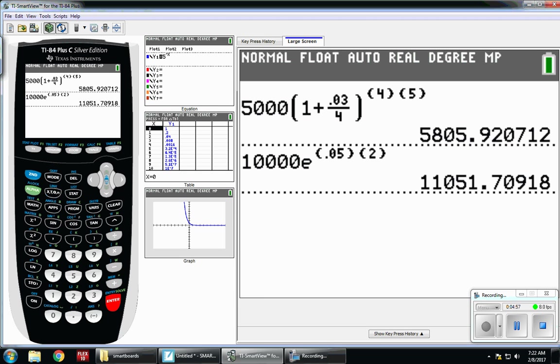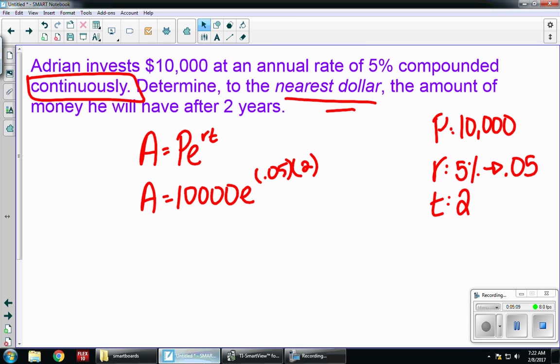$11,051.70, or 71 cents. But they wanted us to round to the nearest dollar. So if I'm rounding to the nearest dollar, that means no decimals. So I have $11,052. Nearest cent is two decimal places. Nearest dollar is no decimal places.